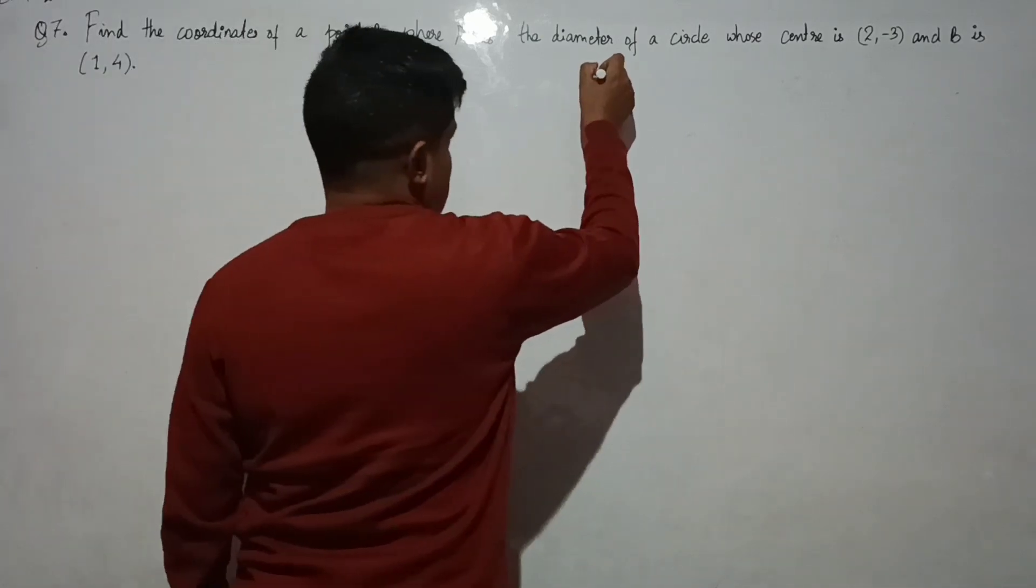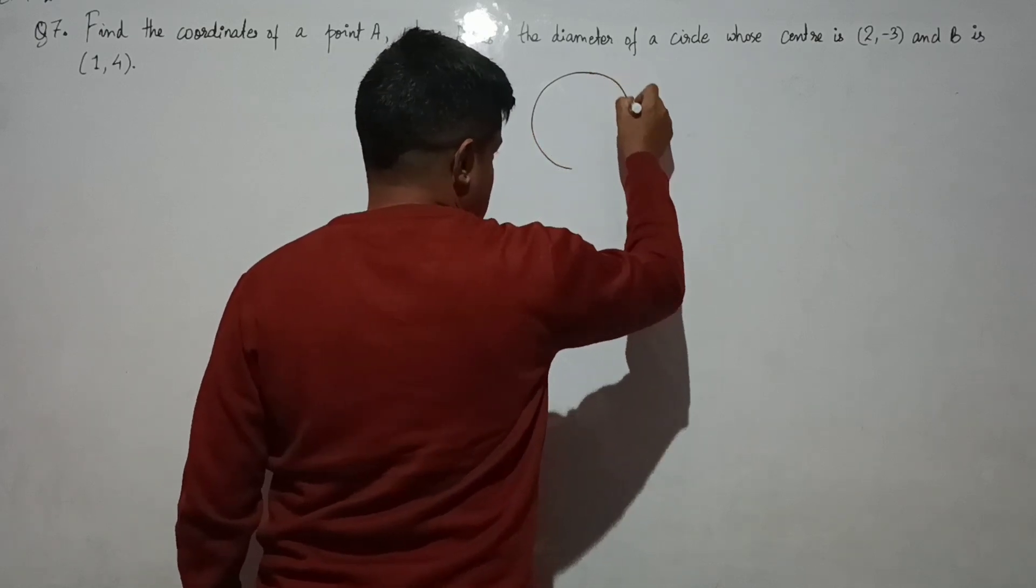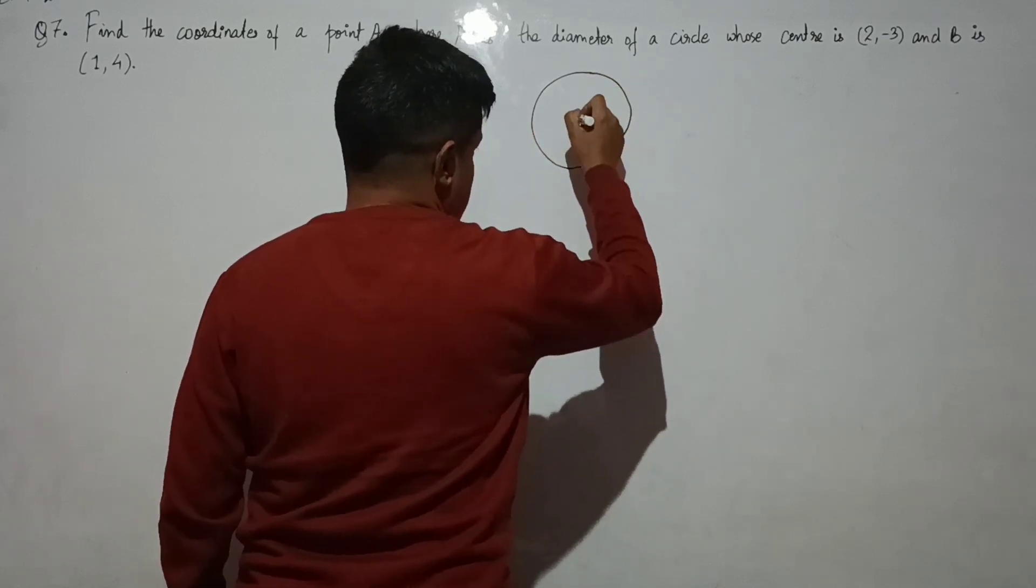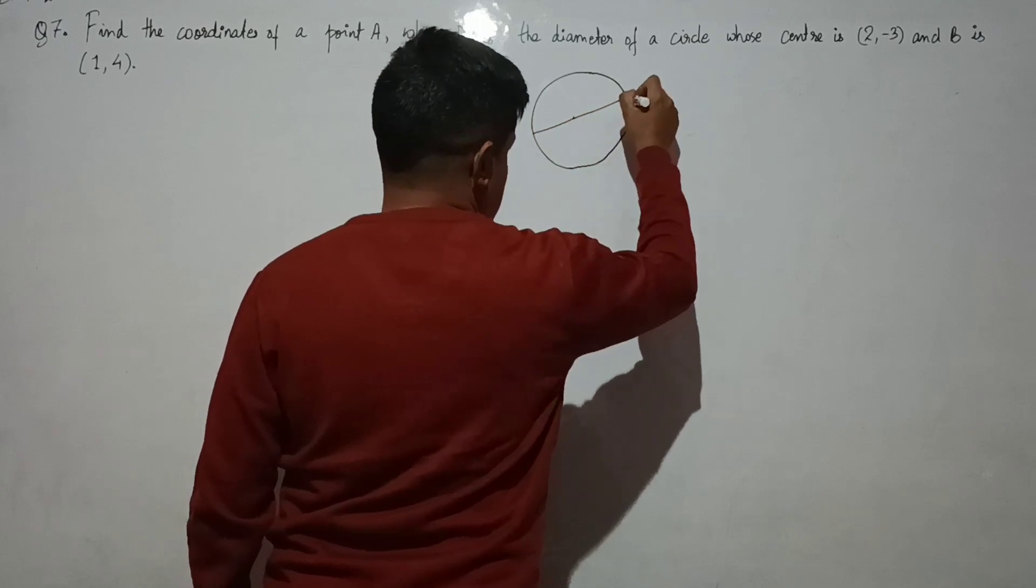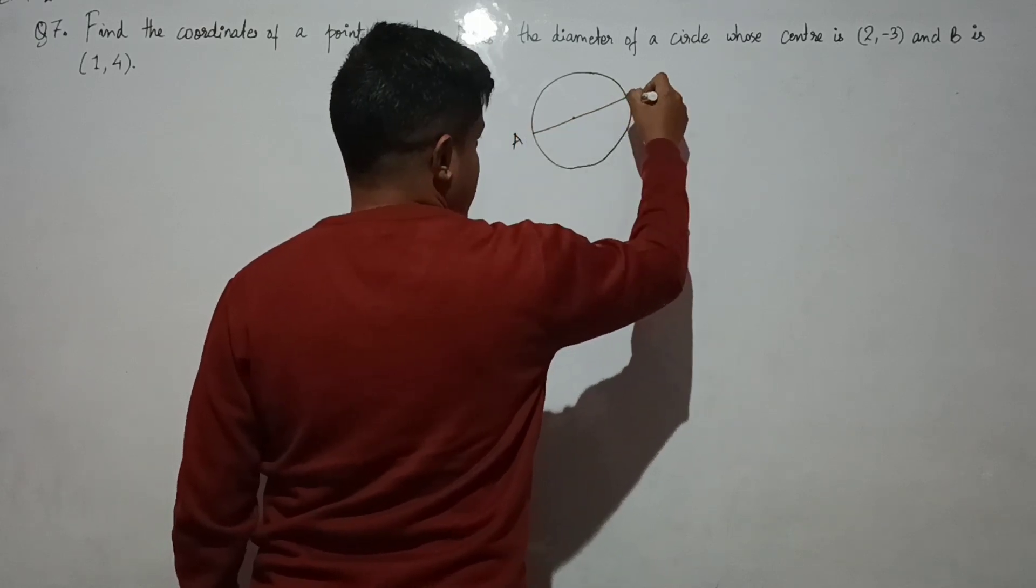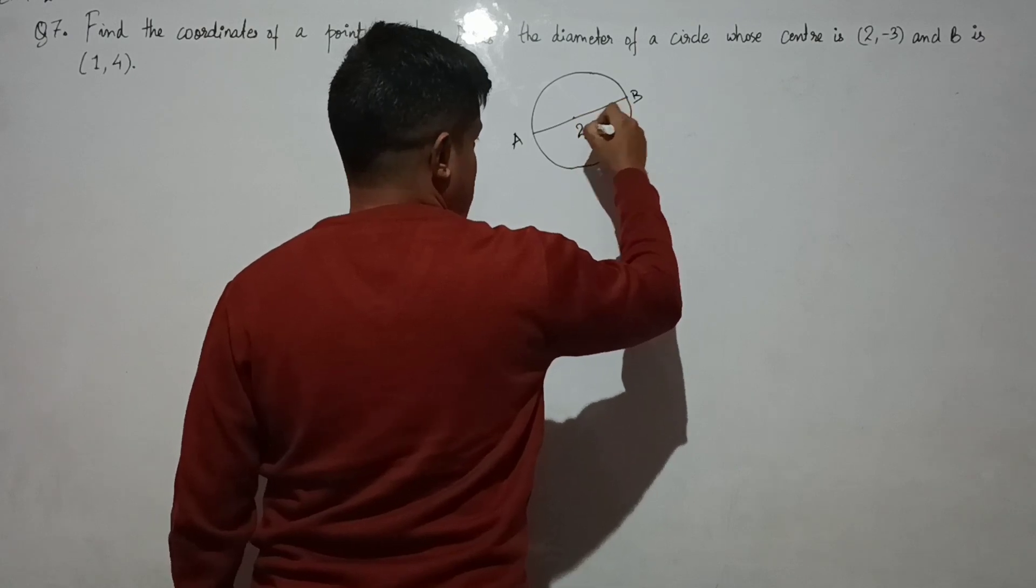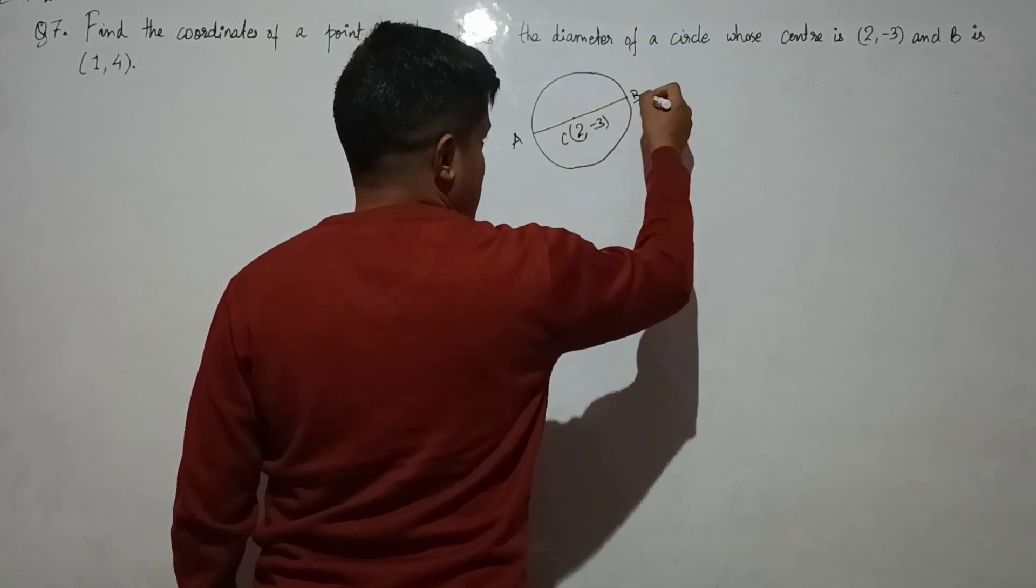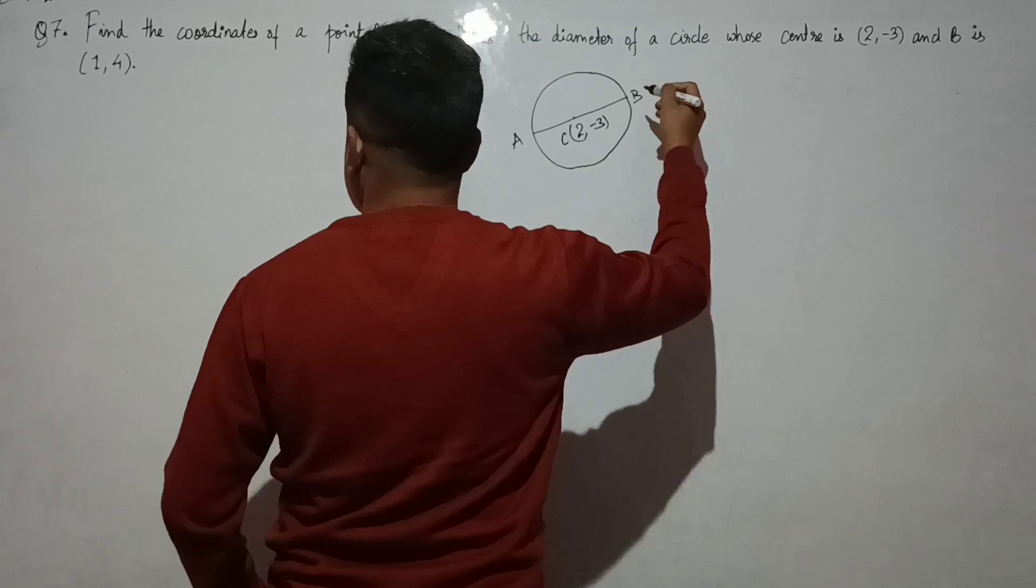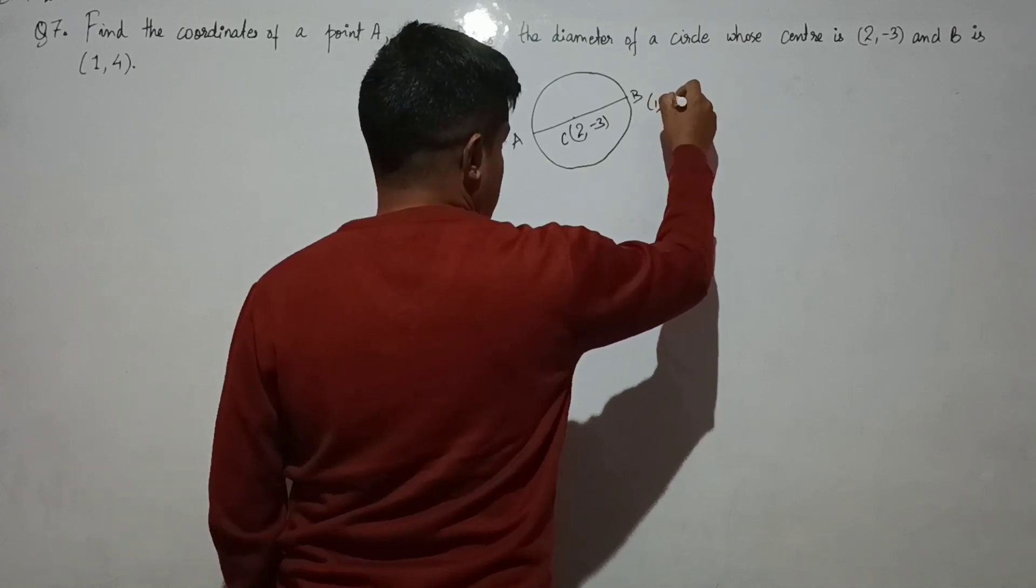AB is the diameter of the circle is the main point in this question. So if you draw a circle and draw a line AB as the diameter where center has been given (2, -3), let us say C, and B is (1, 4).